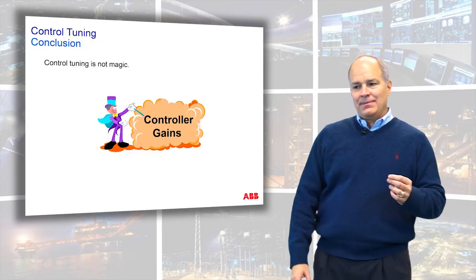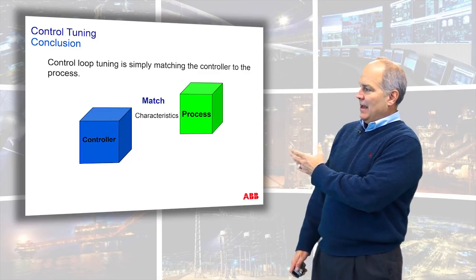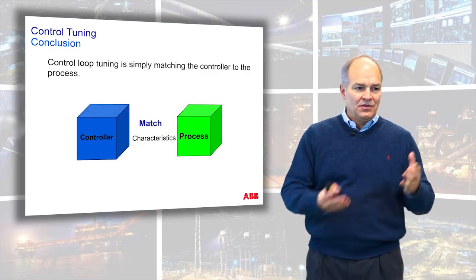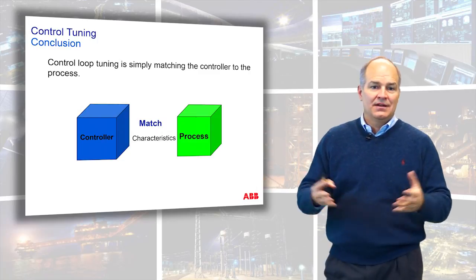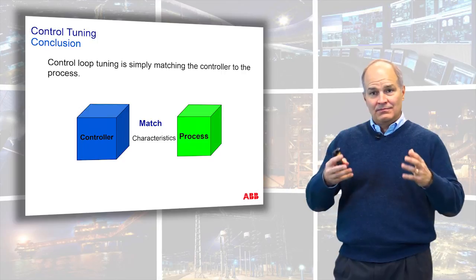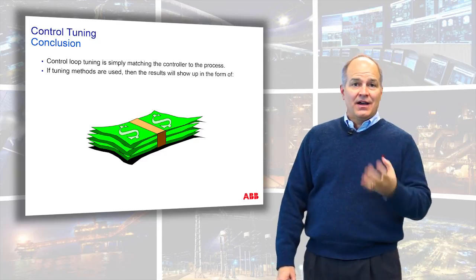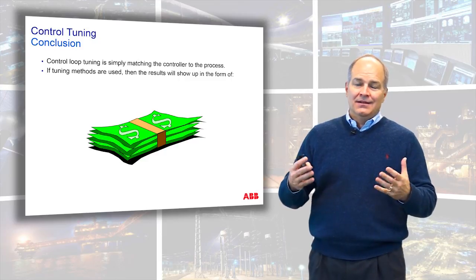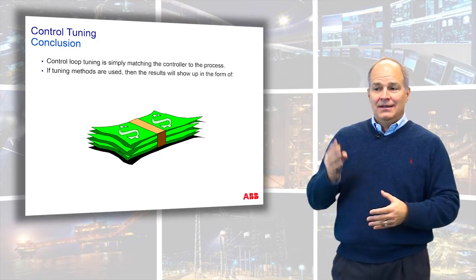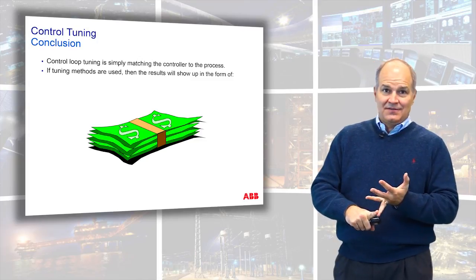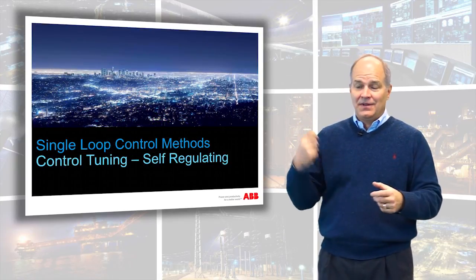To wrap up: tuning isn't just throwing in numbers to see what happens. Start with the process, match it to the controller. Do a bump test, calculate the model, apply the tuning rules, and you have a stable loop. That results in money — less downtime, fewer defects, higher production, higher quality, and a more stable plant. A more stable plant runs faster, runs longer, and produces better product. Start with the process, understand your controller, link the two together, and you hit a home run every time.